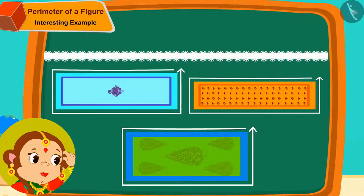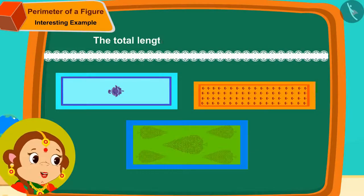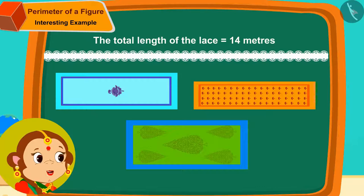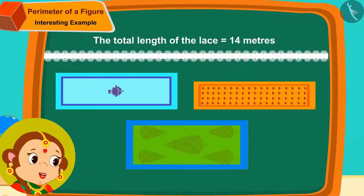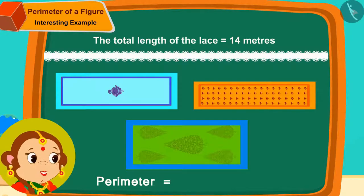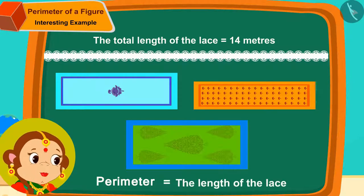Banno thought, the total length of this lace is 14 meters. And if I want to apply this lace on all sides of the sheet, then the perimeter of the sheet will be equal to the length of the lace required.